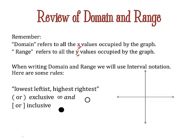Here are some rules: lowest leftist, highest rightest. You always put your numbers in order from lowest to highest. Parentheses mean those numbers are excluded, brackets mean they are included.